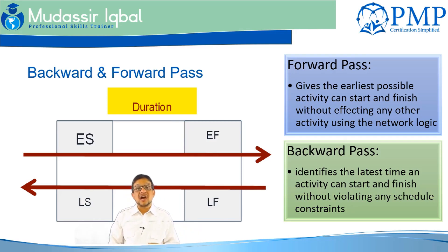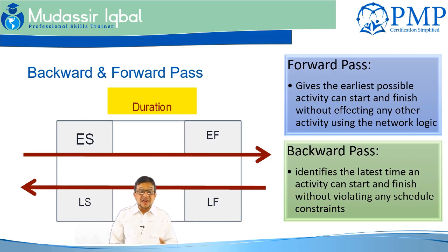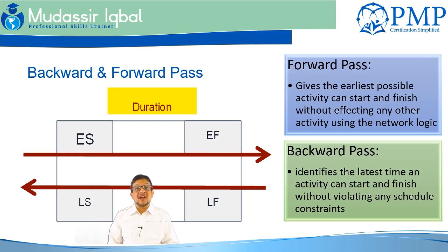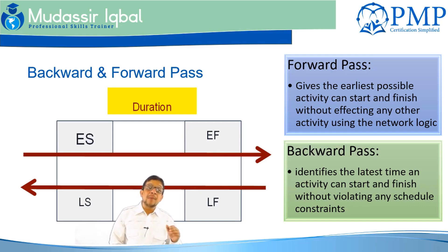The backward pass starts from the end date of the project. If the end date remains constant, it identifies how much delay we can allow on an activity-by-activity basis — specifically, the latest time an activity can start and finish without violating any schedule constraint, whether external, internal, preferred, or mandatory logic built into the schedule.